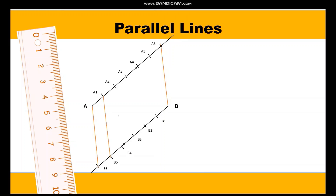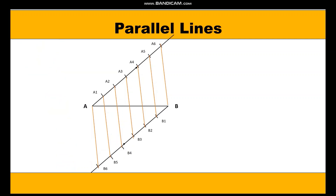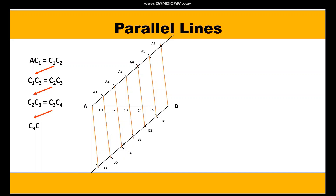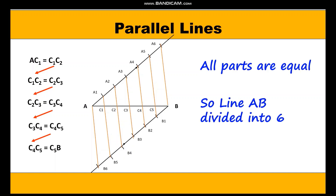Now join A6 to B and B6 to A, and observe that they are parallel to each other. Now we shall join the rest of the points such that these line segments will intersect AB at C1, C2, C3, C4, and C5. So we will get 6 equal parts: AC1, C1C2, C2C3, C3C4, C4C5, and C5B. In this way, we have divided the line segment AB into 6 equal parts internally.